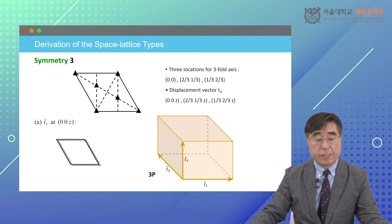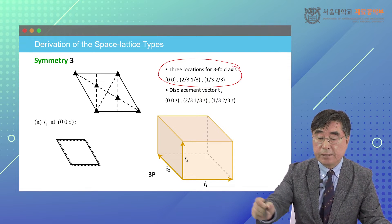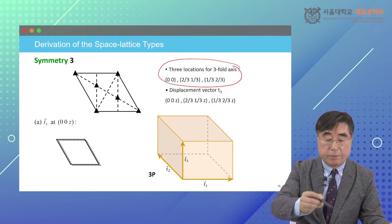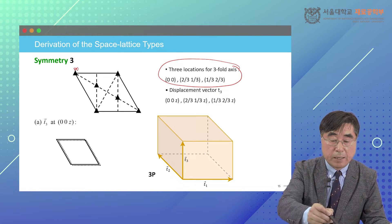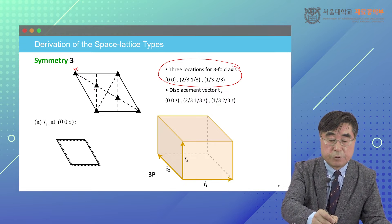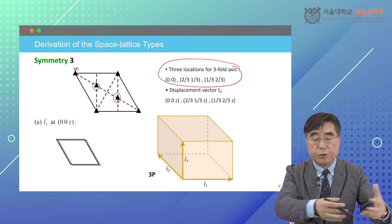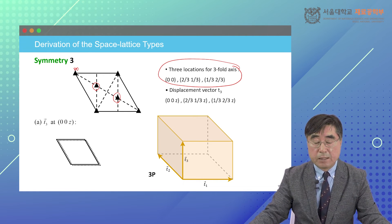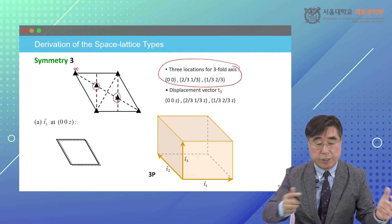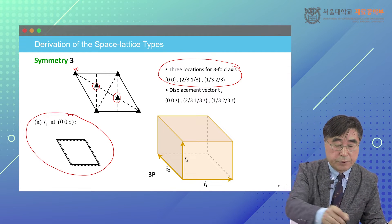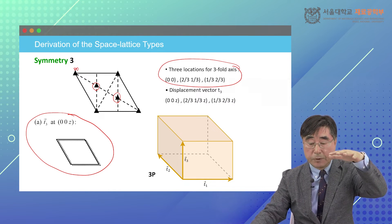Now starting from symmetry 3, there are three locations for the three-fold axis. One is at 0,0, another is at 2/3 and 1/3, and the third is at 1/3 and 2/3, depending on how you define your axis. If I preserve this three-fold system, I can define the T3 vector at 0,0 G, placing it directly on top.